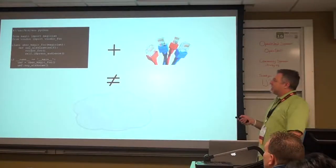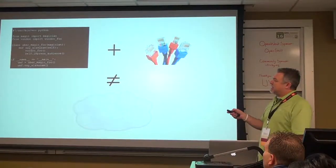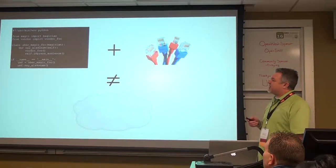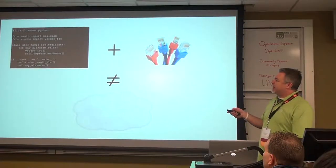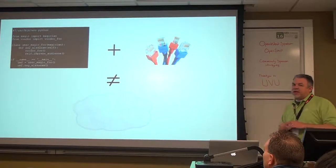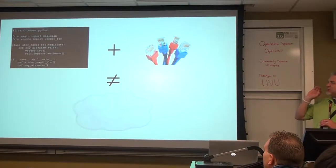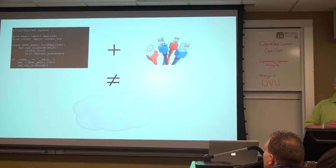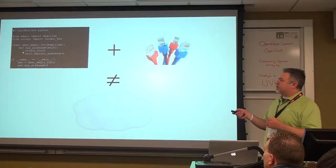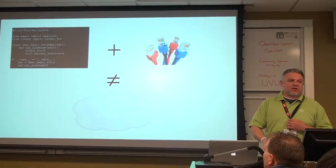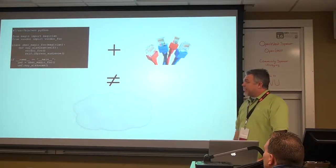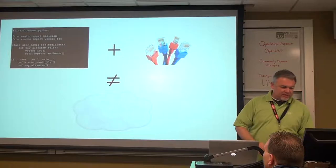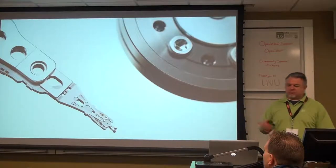The bottom line is this equation is just not going to work. Here's a little magical Python app — it does voodoo foo, all kinds of things. The point is I can't just take this app and put it on the network and call it cloud. That's not going to work anymore. I'm going to refer to these as 20th century apps. A lot of you weren't coding in the 20th century, but the way we did things back then is just not going to work anymore.